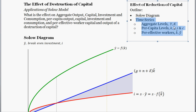We'll cover all the aggregate levels of output and capital, the per capita levels of capital, output, investment and consumption, and then per effective worker levels of capital and output.